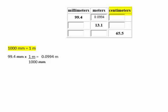Next, I'll convert millimeters to centimeters. The conversion factor between millimeters and centimeters is 10 millimeters in one centimeter. The dimensional analysis setup is 99.4 millimeters times the conversion factor 1 centimeter over 10 millimeters. The millimeter units cancel, and the math is 99.4 divided by 10, which is 9.94 centimeters.